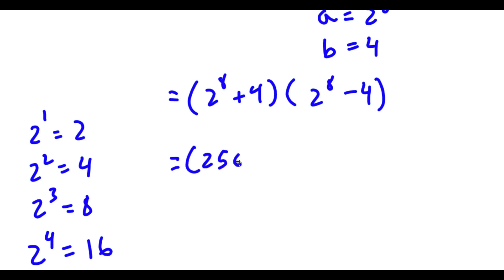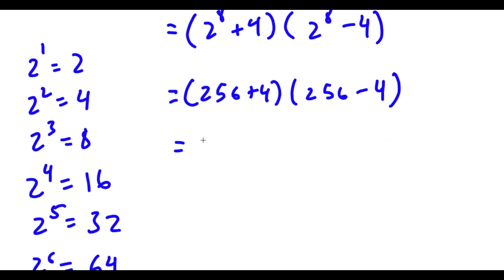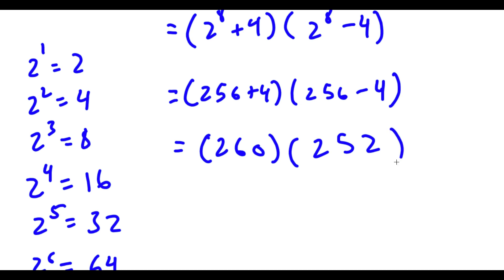So 2 to the power of 8 is 256. So now I have 256 plus 4 times 256 minus 4. Now 256 plus 4 is going to be 260, and 256 minus 4 is going to be 252.